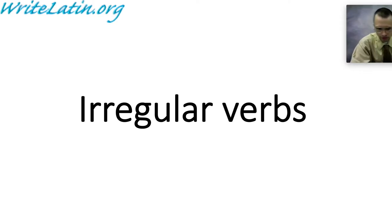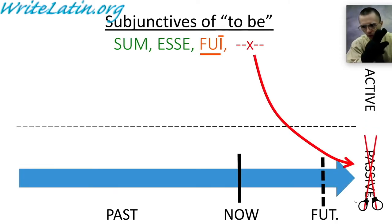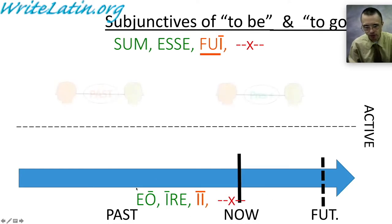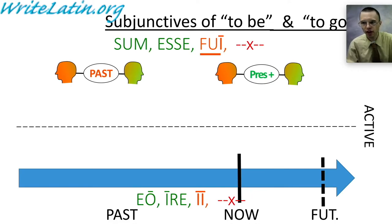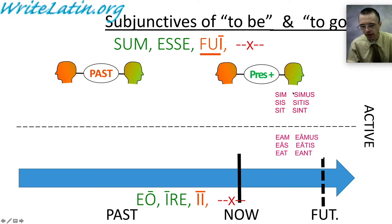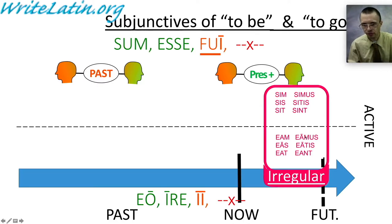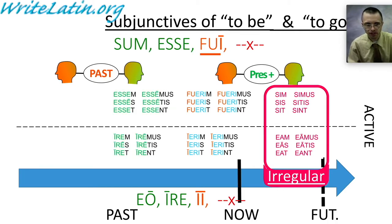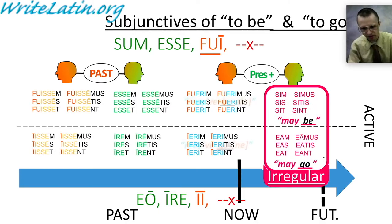The last thing in this part of the video is irregular verbs: the verb 'to be' and the verb 'to go.' These do not have a passive because you can't say 'I was be'd' or 'I was gone'd' — so they only have active. In our four tenses, these will follow the expected patterns except in the present forward-looking subjunctive, where sum becomes sim. The others follow the rules: perfect stem plus form of erim; present infinitive plus ending; perfect infinitive plus ending. The translations are exactly what you would expect.